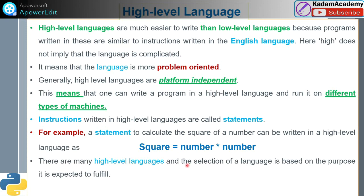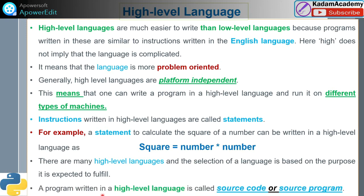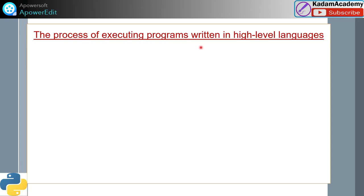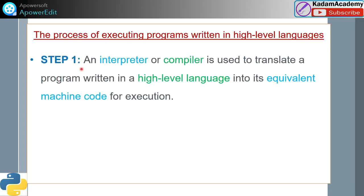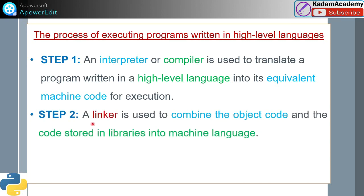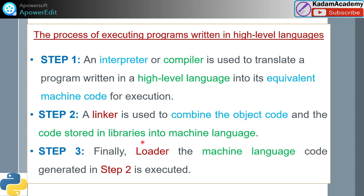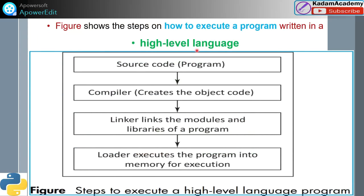The selection of language is based on the purpose it is expected to fulfill. A program written in a high-level language is called source code or source program. The process of execution: in step one, an interpreter or compiler translates the program into equivalent machine code. In step two, a linker combines the object code and code stored in libraries into machine language. Finally, a loader loads the machine language code and it is executed.